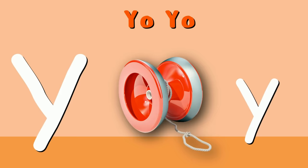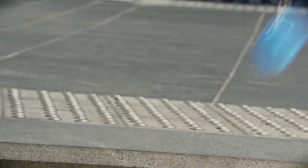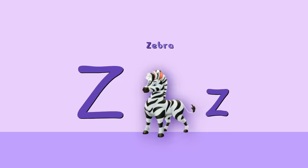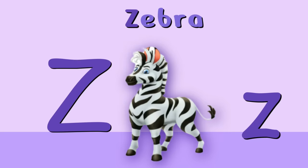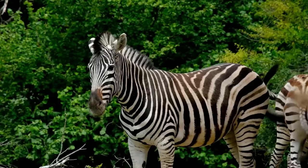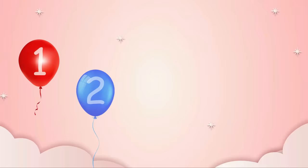Violin. Y is for yo-yo. y-y-yo-yo. y-y-yo-yo. Y, yo-yo. Z is for zebra. z-z-zebra. z-z-zebra. z-z-zebra, z-zebra. 1, 2, 3, 4, 5, 6, 7, 8, 9, 10.